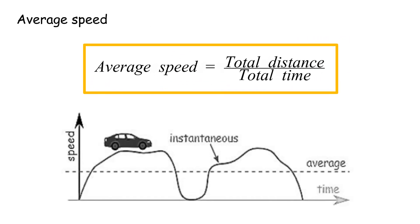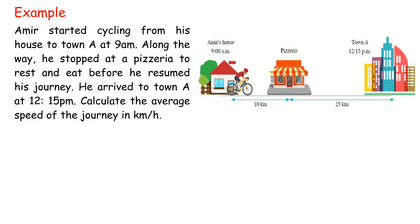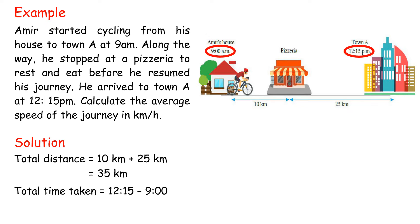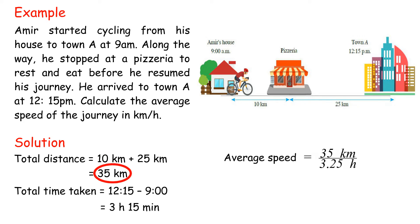Average speed equals total distance over total time. Example: Amir started cycling from his house to town A at 9 a.m. Along the way, he stopped at a pizzeria to rest and eat before he resumed his journey. He arrived at town A at 12:15 p.m. Calculate the average speed of the journey in kilometers per hour. Solution: Total distance equals 10 kilometers plus 25 kilometers, equals 35 kilometers. Total time taken equals 12:15 minus 9:00, equals 3 hours 15 minutes. Average speed equals 35 kilometers over 3.25 hours, equals 10.77 kilometers per hour.